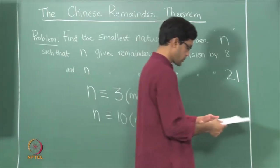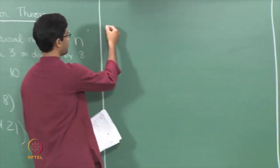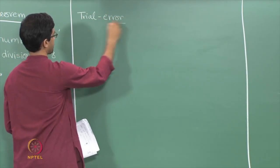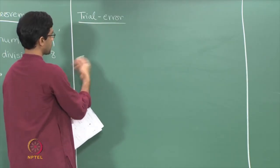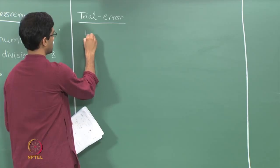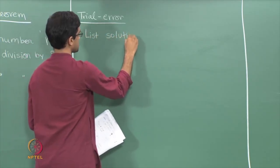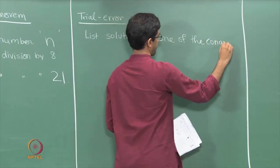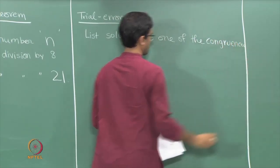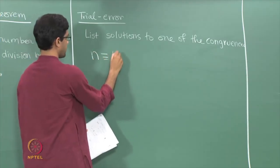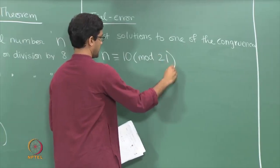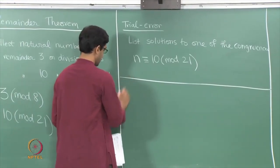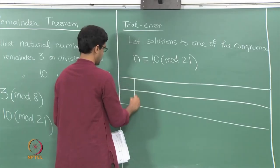Let us go about this in one way — a sort of brute force approach. The trial and error method is the following: write out all possible solutions to one of the congruences. So list all solutions to one of the 2 congruences. For instance, let me pick n is congruent to 10 modulo 21 and write out all the values of n.